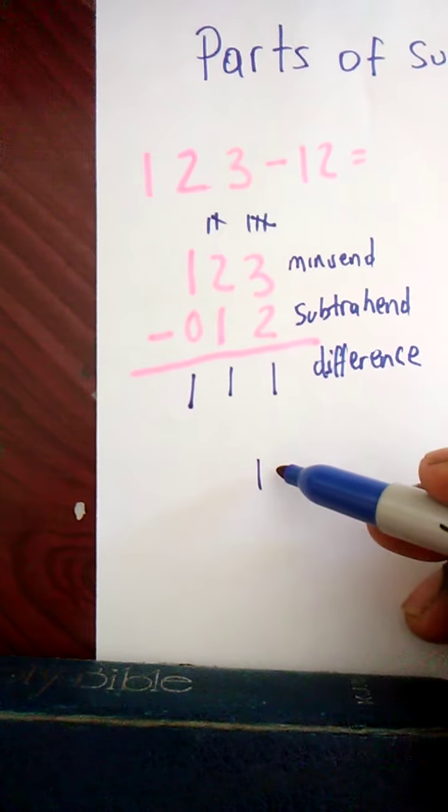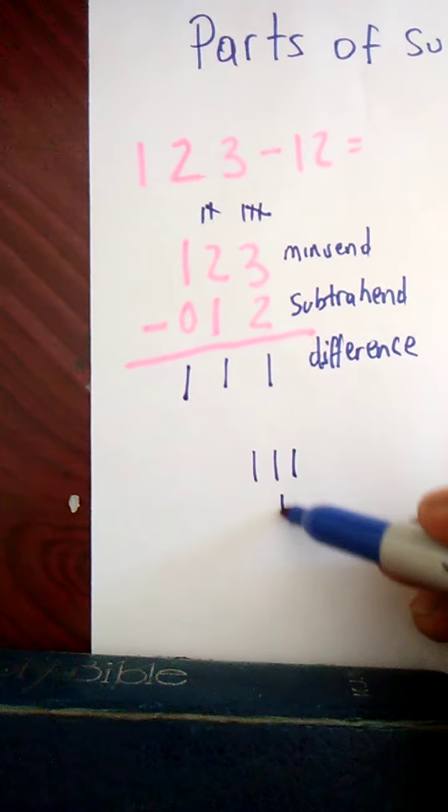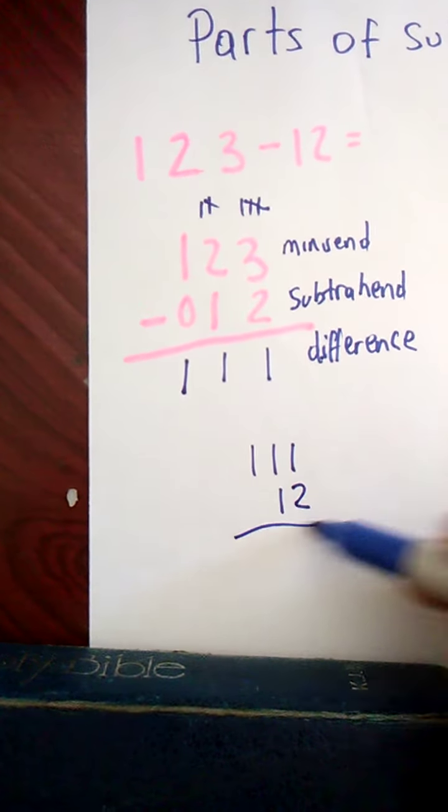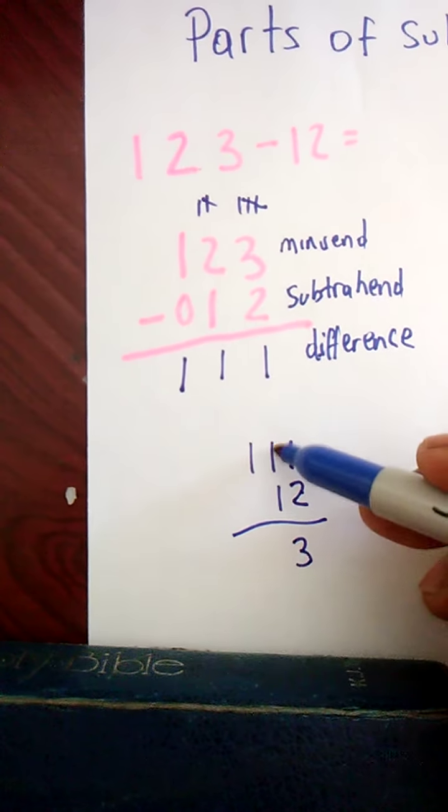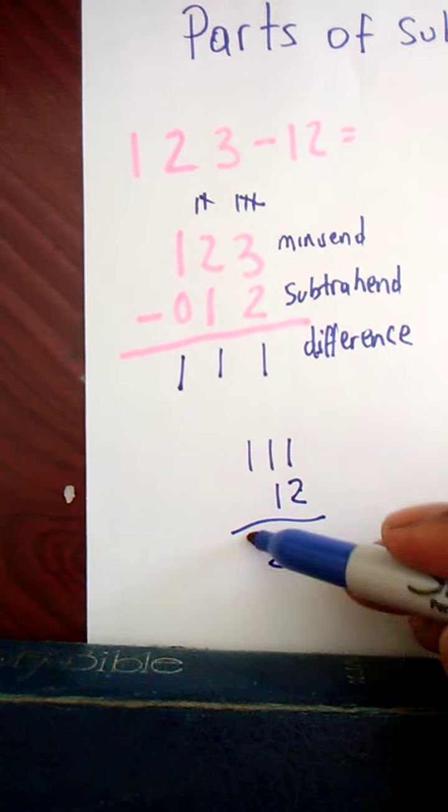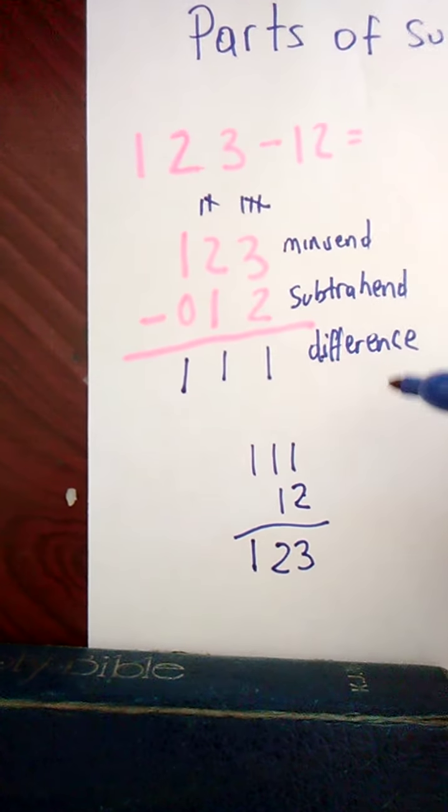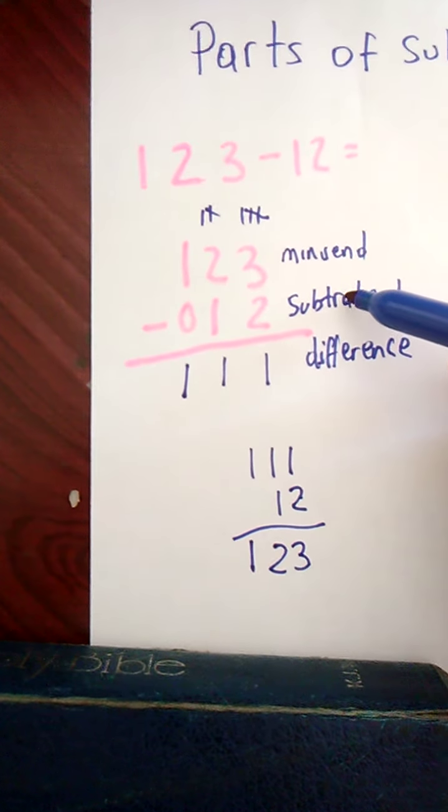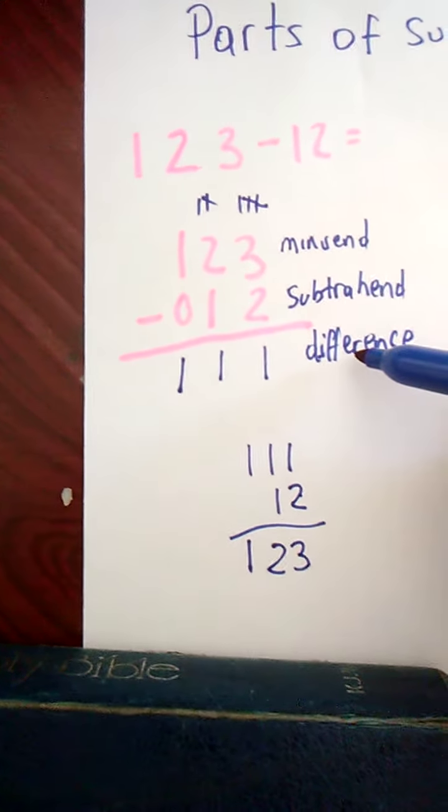So let's have 1, 1, 1, which is the difference. And let's add back the subtrahend into it. 2 and 1 gives you 3, 1 and 1 gives you 2, and 1. So if you want to find out to prove if you're correct, you could just add what you subtract from it and the difference that you get.